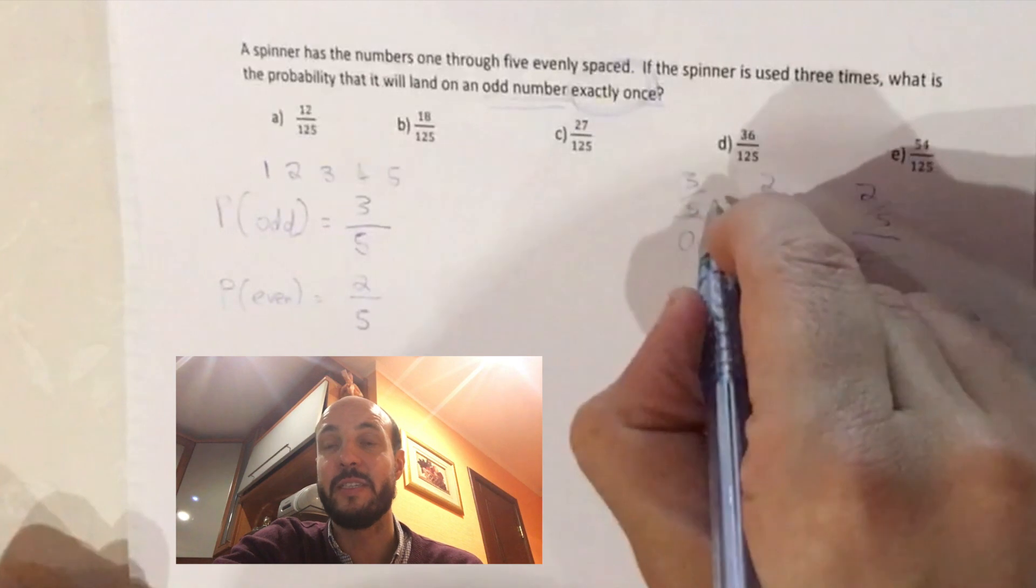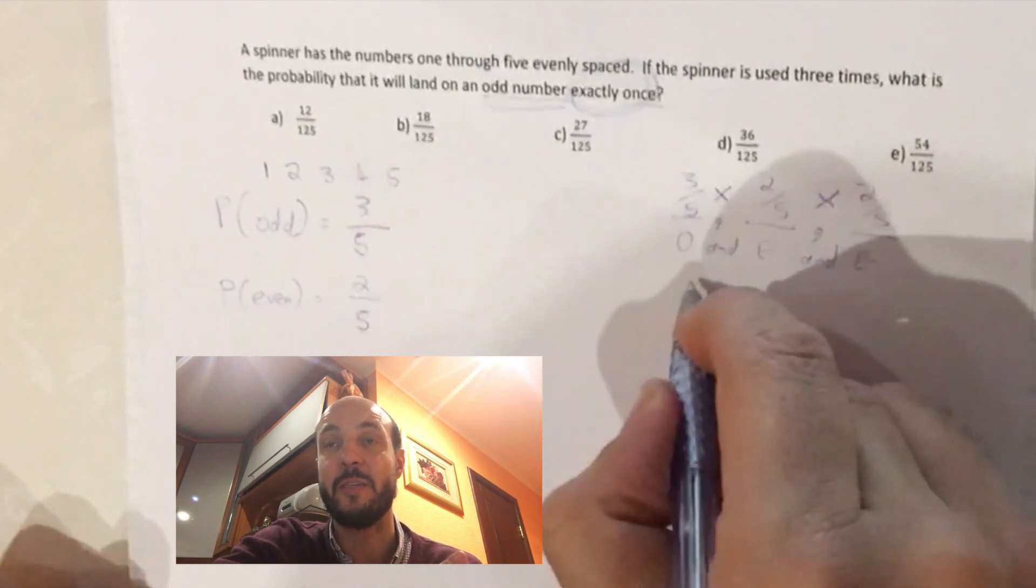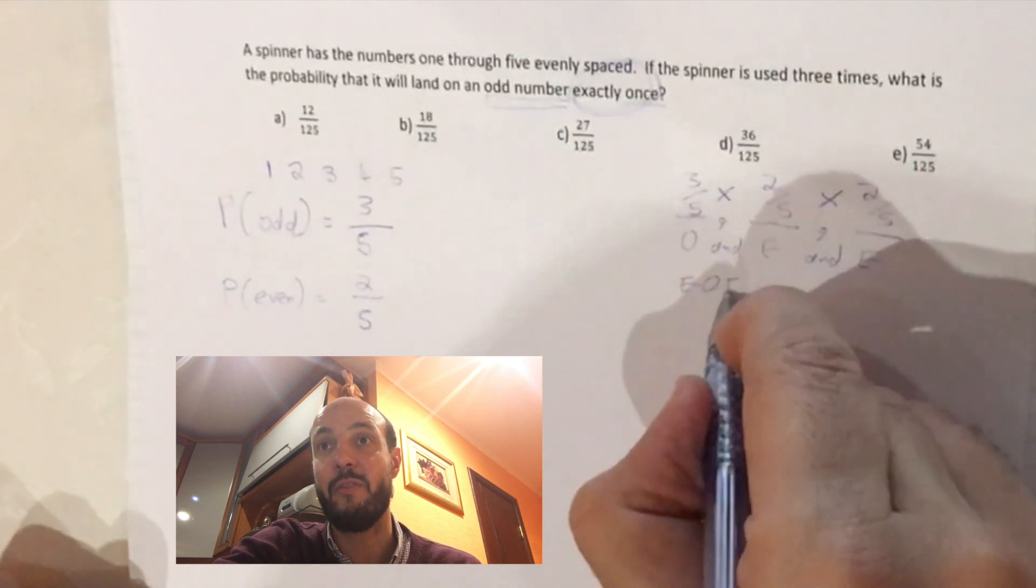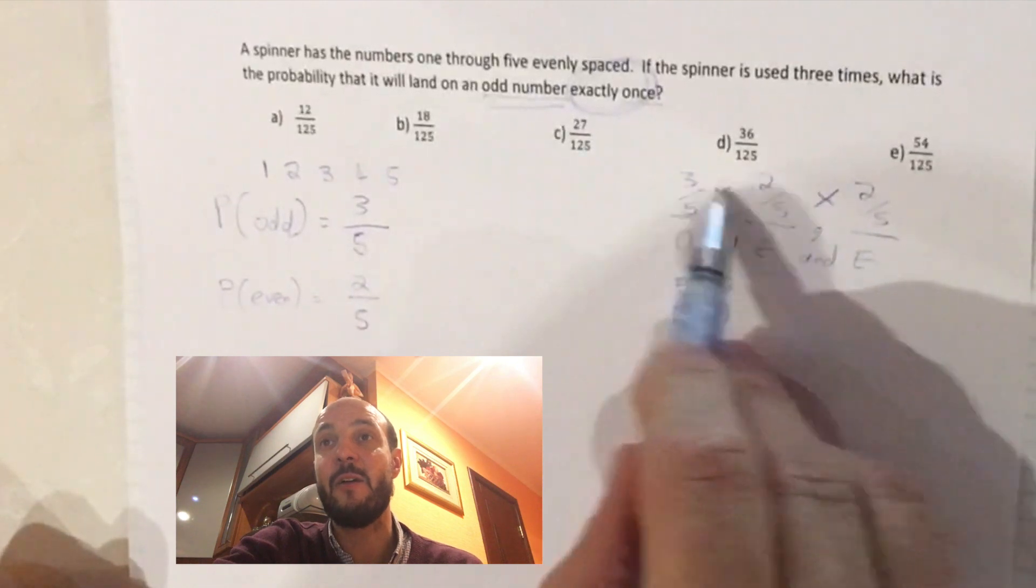So if we want odd and even and even, in probability we're always multiplying. Whenever we've got something happening and something happening we multiply. If it were or we would add. So we've got 3 over 5 times 2 over 5 times 2 over 5.